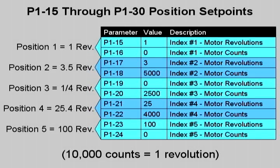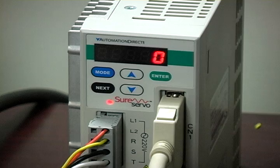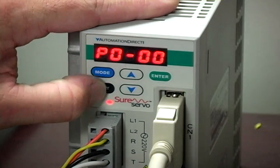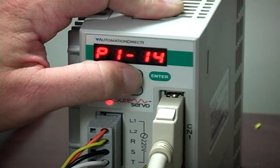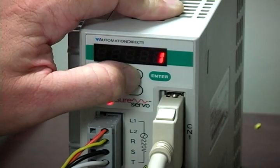Configuring the position set points. Parameters P115 through P130 determine the set points of positions 1 through positions 8. Each set point can have two parts: full motor revolutions in the first register and an additional number of pulses in the second. So to move the motor exactly one revolution, place a 1 in the first position parameter P115 and leave 0 in the second P116.